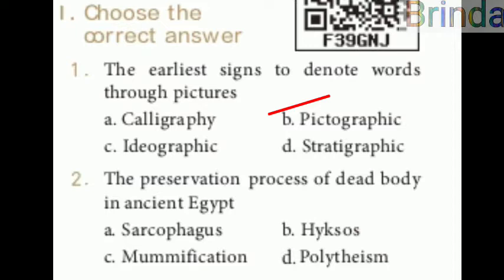Second one: the preservation process of dead body in ancient Egypt. Options are sarcophagus, Hyksos, mummification, polytheism. The answer is mummification — the process of preservation of dead bodies in ancient Egypt.